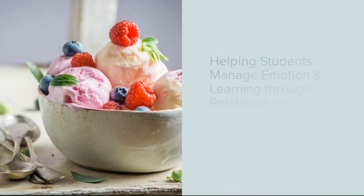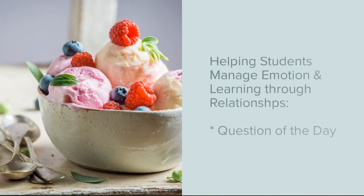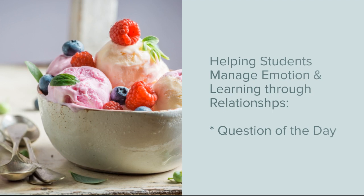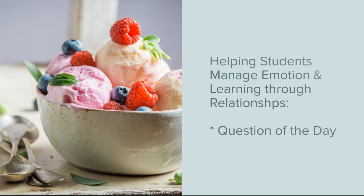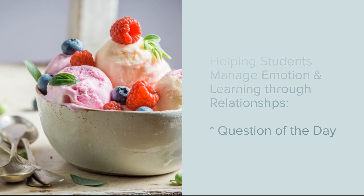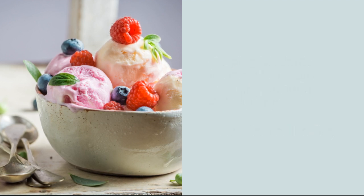Healthy relationships are a key component of emotional literacy and emotional health. Social relationships are highly important to adolescents and they need to feel a sense of belonging in order to feel safe expressing their emotions. My favorite way to build relationships in a secondary classroom is through a question of the day strategy. This involves asking low-threat questions such as 'what is your favorite ice cream topping?' to invite students into natural conversations where they can get to know each other in a low-stress way.